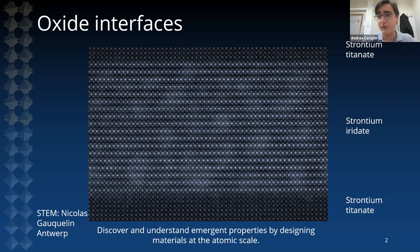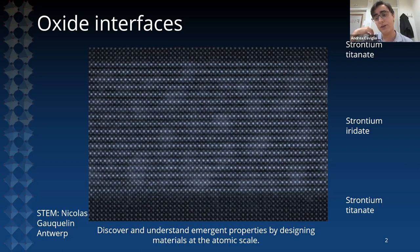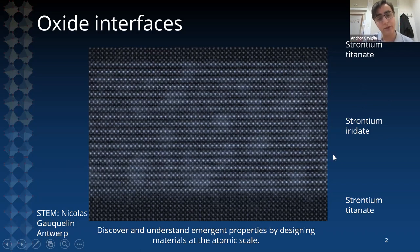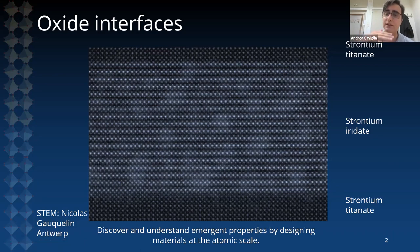Each bright spot that you see in this image is a representation of an atomic column, and this is an atomically sharp heterostructure where two dissimilar materials have been brought together. One is called strontium titanate, the other is strontium iridate, then there is strontium titanate again.